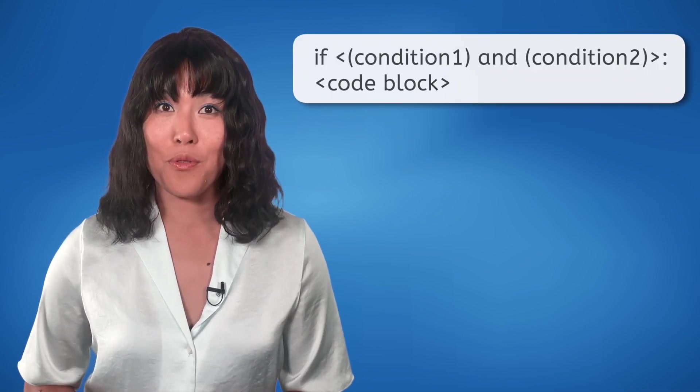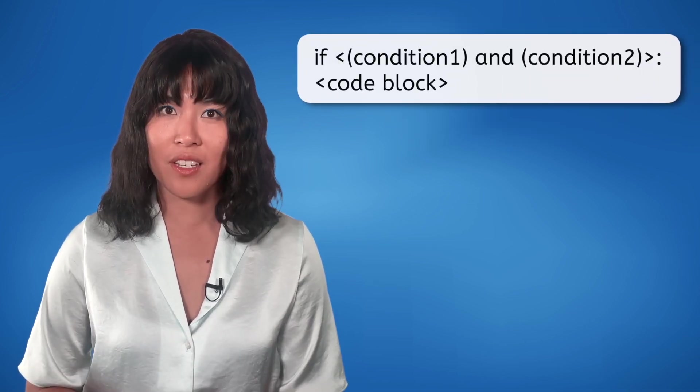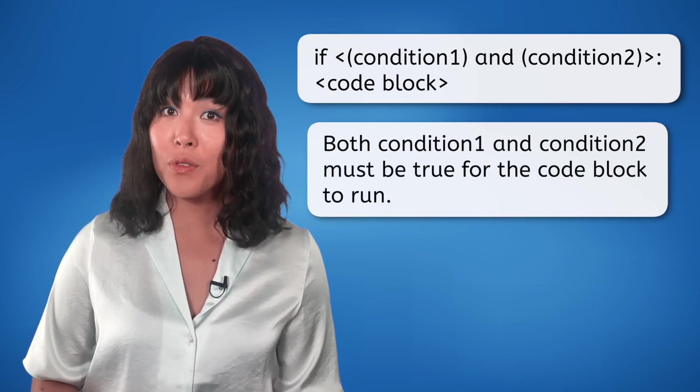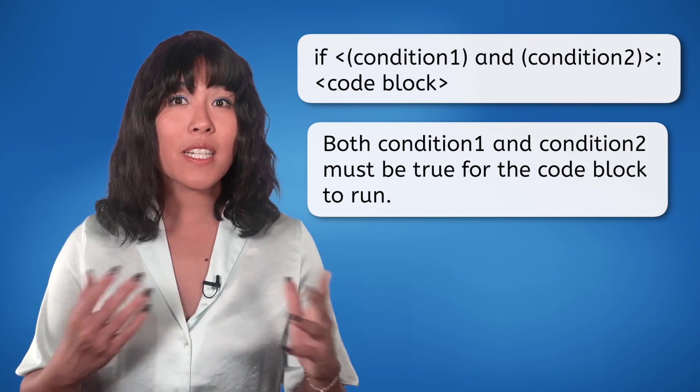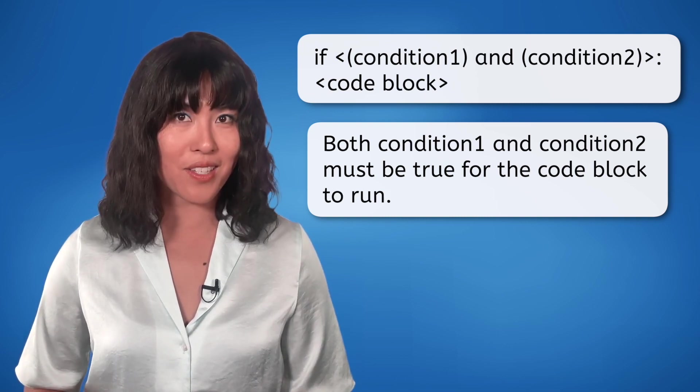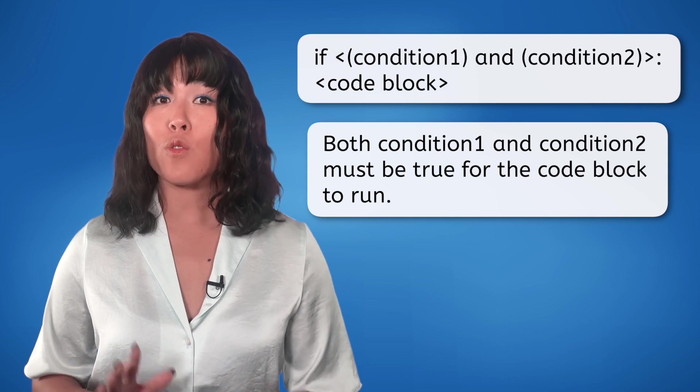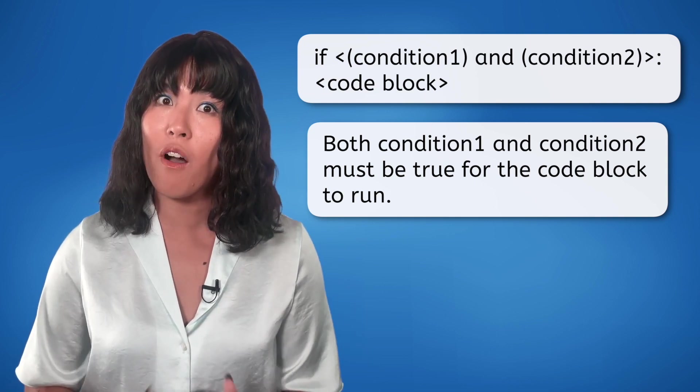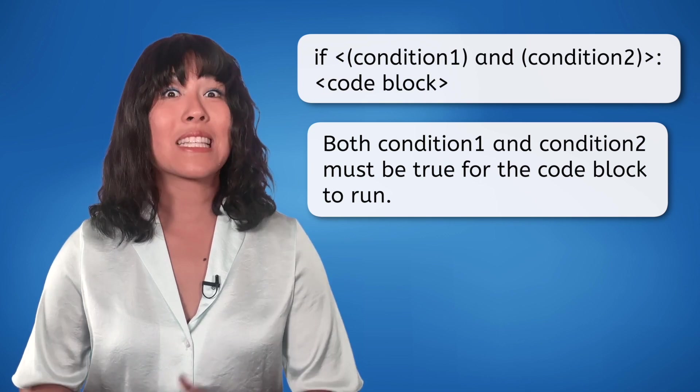The AND operator is placed between two conditions. Each condition is checked individually, and if both conditions are true, the whole condition becomes true and the code block will execute. But if even one of the conditions is false, the whole condition becomes false and the code block will be skipped.